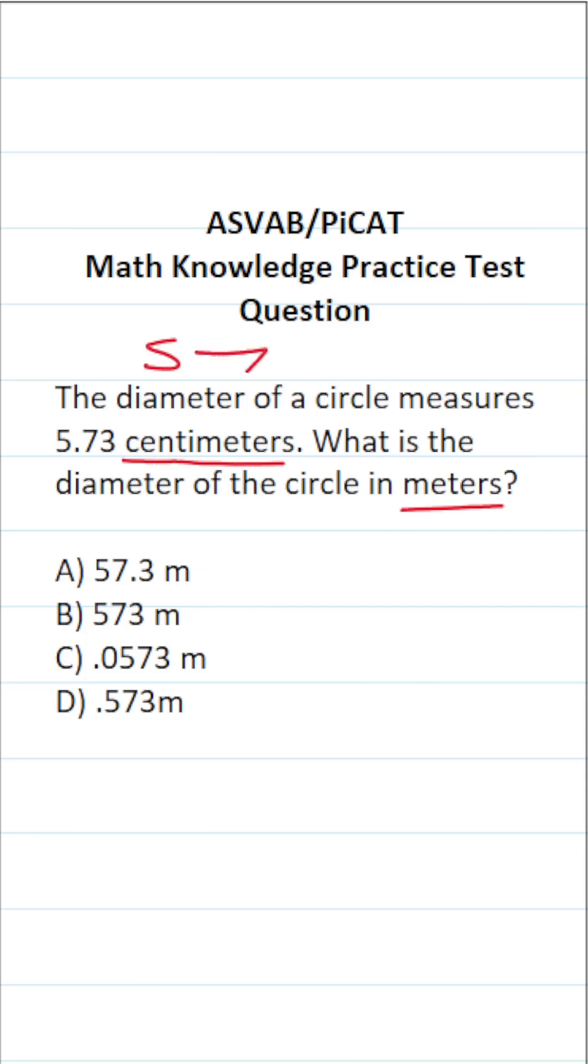When you go from a small unit to a bigger unit, that's going to prompt you to use division. And in this case, you have to know that there are 100 centimeters in one meter. So in other words, to find how many meters are in 5.73 centimeters, we're going to take that and divide it by 100.